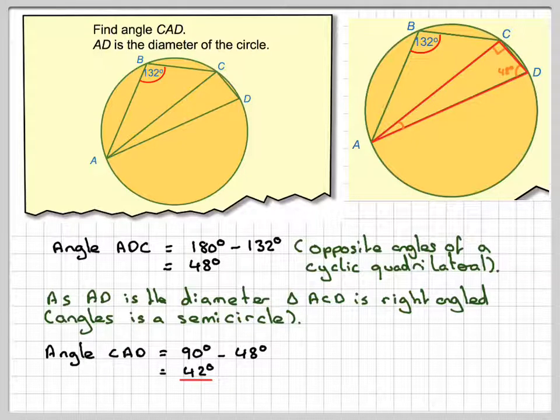OK, so this has been a video to show you how to use cyclic quadrilaterals and the idea that angles in a semicircle, the angle at the circumference, will be 90 degrees. I hope you've understood, and thank you very much for watching.